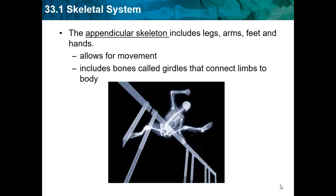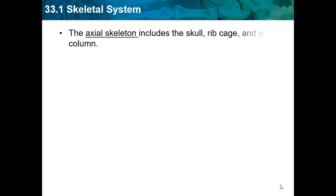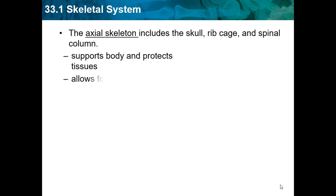The appendicular skeleton includes bones called girdles that connect the limbs to the body. The axial skeleton includes the skull, rib cage, and spinal column. It supports the body and protects tissues, and allows for limited movement.